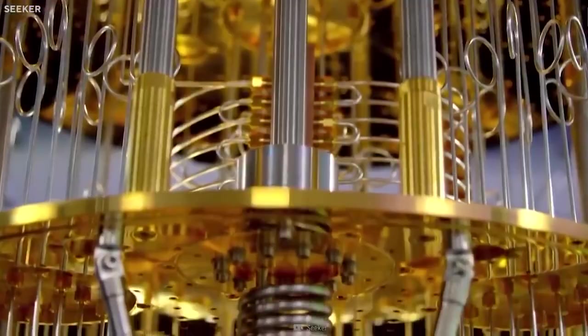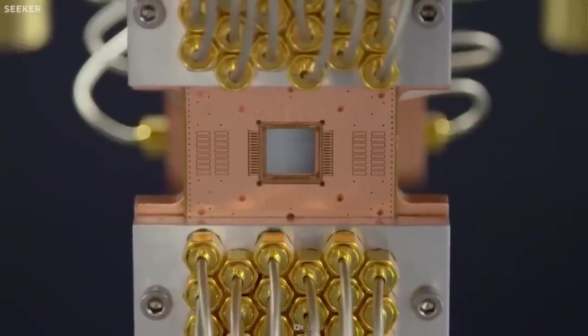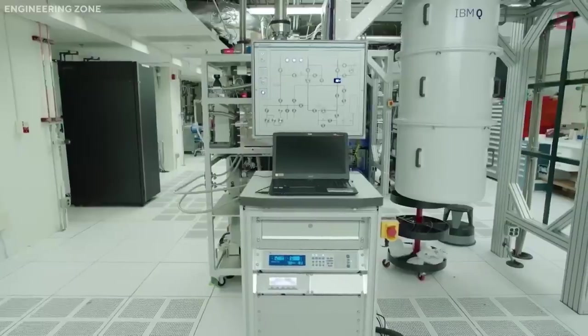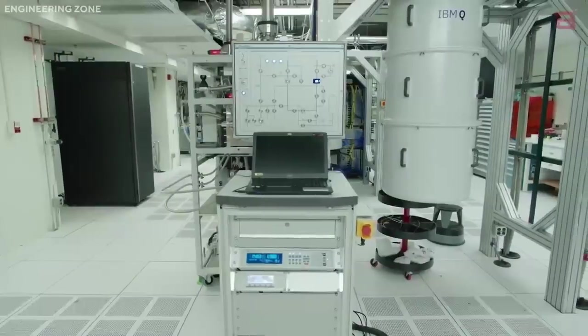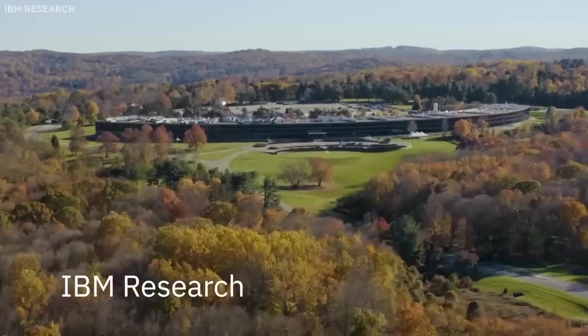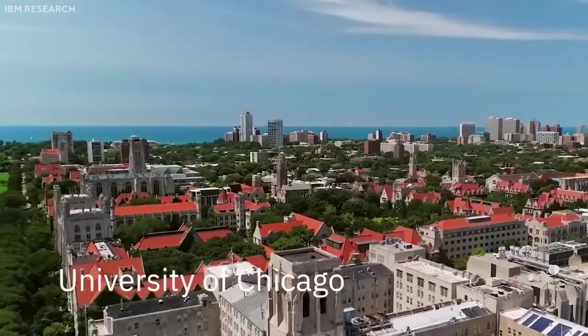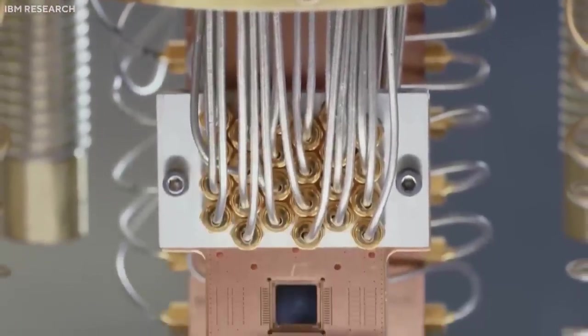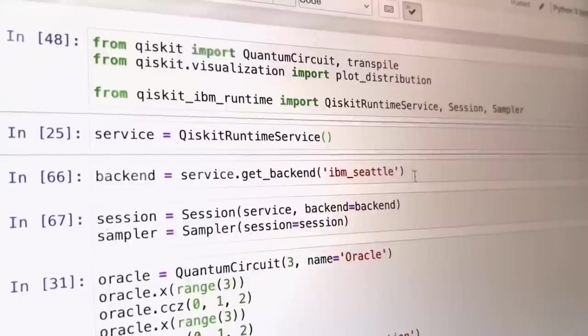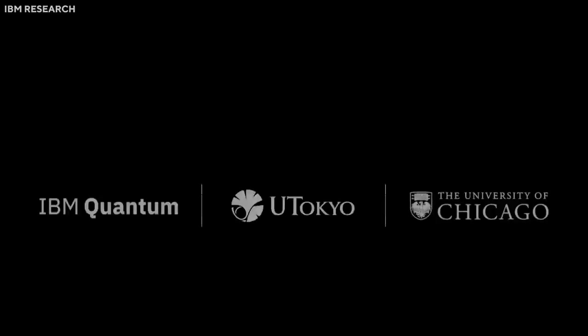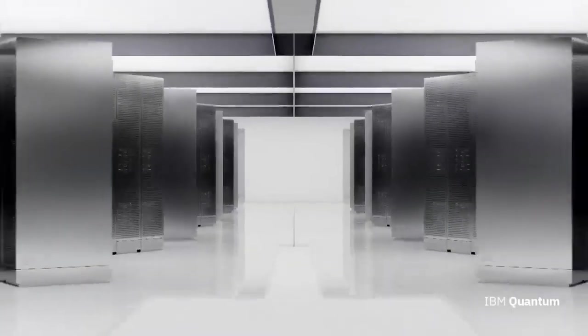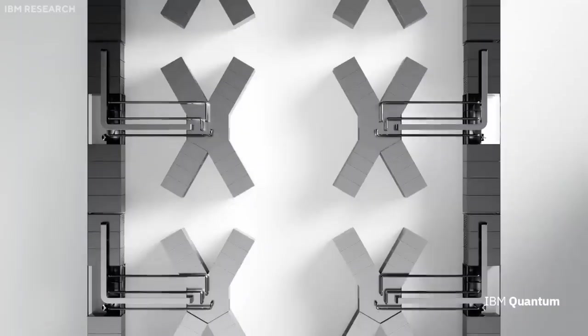Building a quantum-centric supercomputer of this magnitude is not a solitary endeavor. It necessitates a collective effort that harnesses the finest minds in the field. It is this understanding that spurred IBM to forge partnerships with leading academic institutions and research organizations across the globe. The University of Tokyo and the University of Chicago, two institutions recognized for their contributions to quantum computer science, quantum components, quantum algorithm design, and quantum communication, have become the first partners in this ambitious journey. Together, they are taking the initial steps to make 2033 the year of quantum-centric supercomputing.